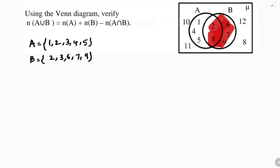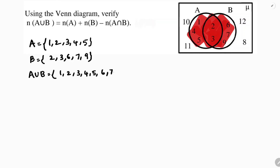Next, A∪B. You need to write all the elements of both sets. So A∪B = {1, 2, 3, 4, 5, 6, 7, 9}.